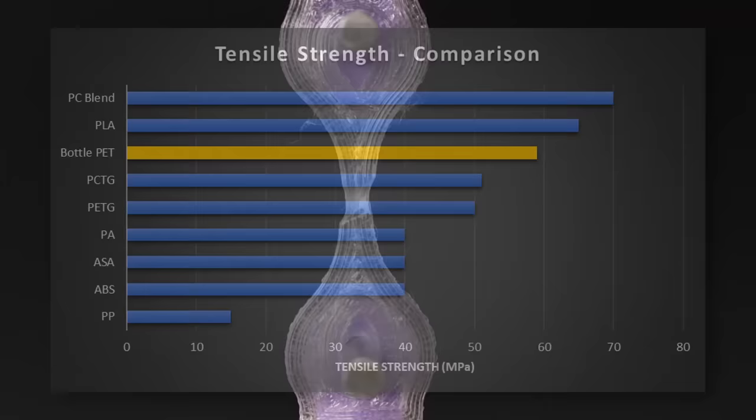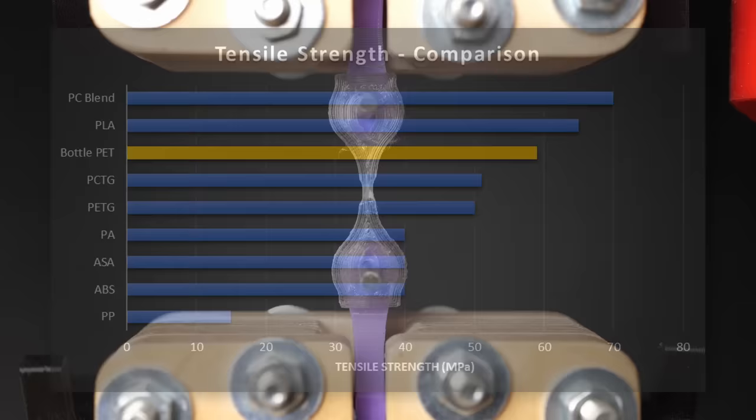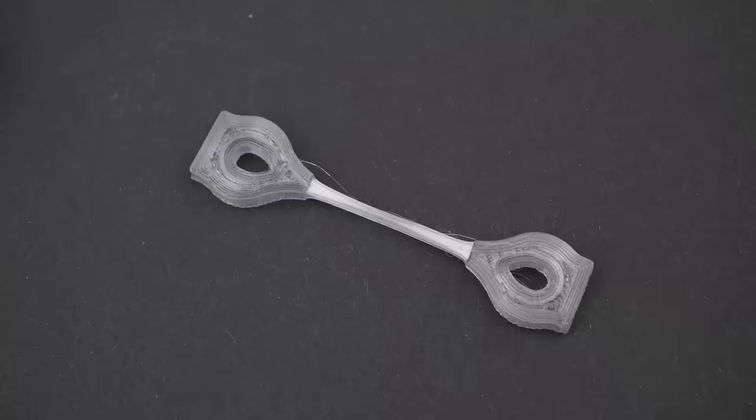With 59 MPa of failure load, they were definitely one of the stronger materials I've tested so far. And different from PLA for example, they were really ductile and didn't break.